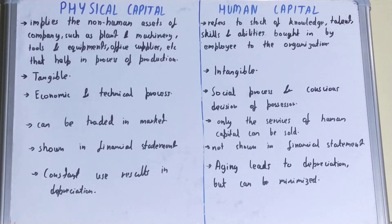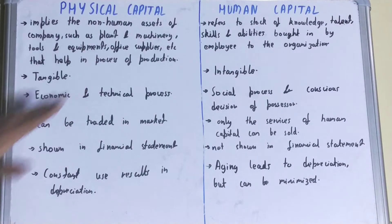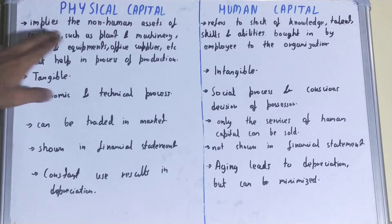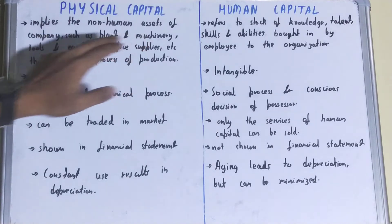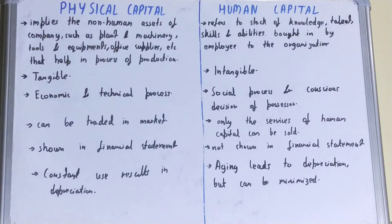Physical capital implies the non-human assets of a company, such as plant and machinery, tools and equipment, office supplies, etc., that help in the process of production. So physical capital contains all the non-human assets of the company.